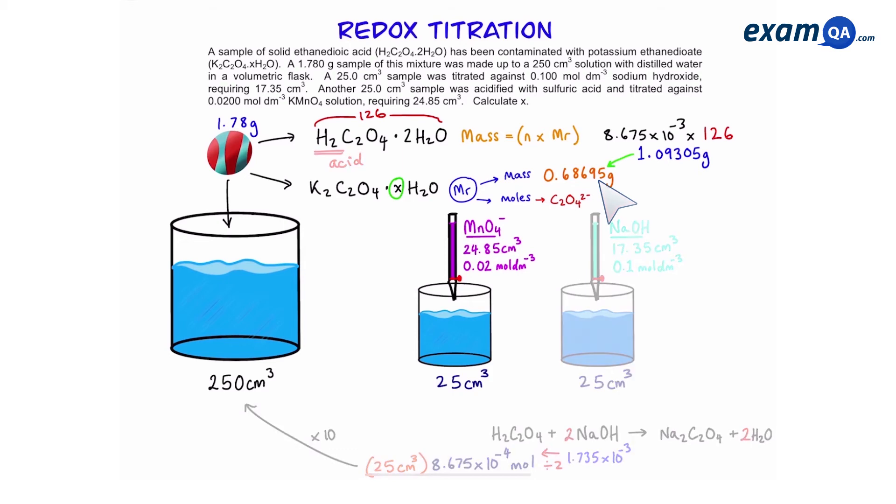Next let's start to work out the moles. Okay so remember potassium ethane dioate is not an acid it's just a reducing agent. Therefore we will use manganate as our source of working out the moles. So in this we want to work out how many moles of ethane dioate there are.